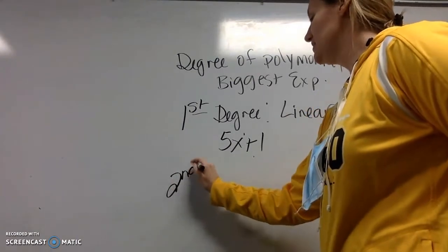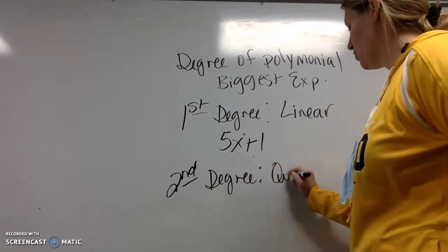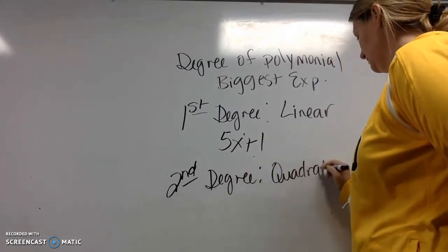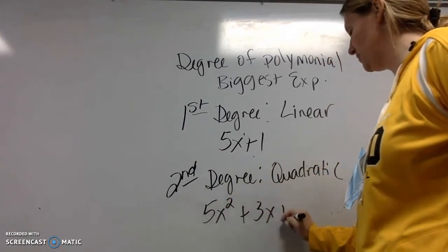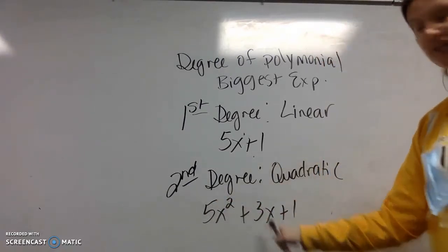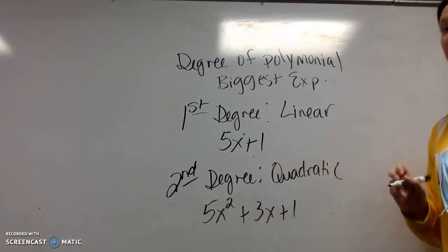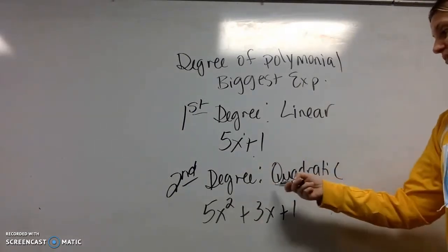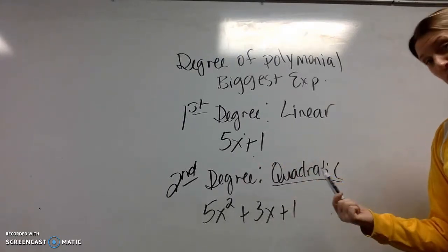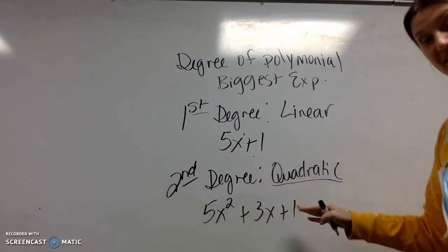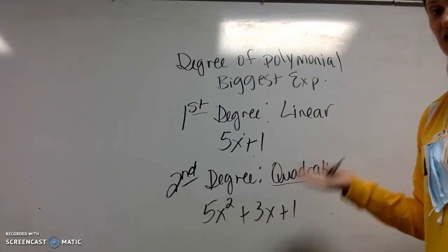Then a second degree is called a quadratic. So that example I had up there before or something similar to it, this is called a quadratic. It's a second degree, but we call those a quadratic. You will learn about quadratics next chapter. Quad doesn't mean two, so there's really no easy way to remember. You just have to know that that's called a quadratic.